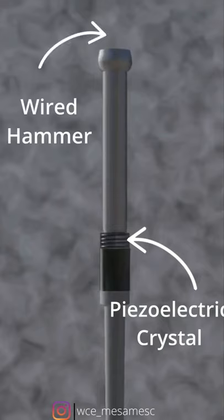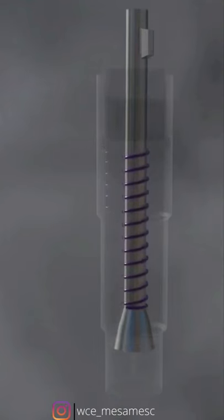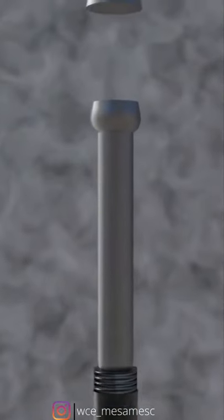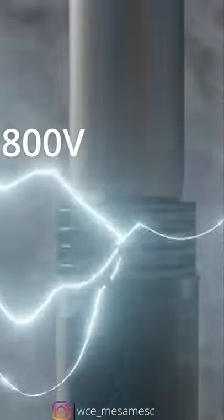Inside the cylindrical lighter, when we press the lighter, the hammer gets pushed, hitting the piezoelectric crystal and resulting in a high voltage—that is 800 volts—electric discharge in that small gap between two metallic points placed at the lighting end.